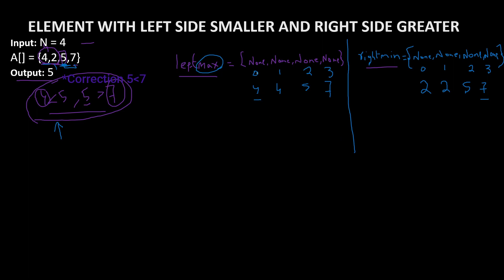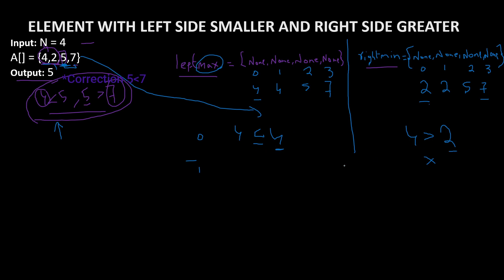After getting the left max and right min values, we compare. At index 0, left_max is 4 and array value is 4, so 4 is less than or equal to 4 - left max condition is satisfied. But for right_min, the value is 2 and array value is 4, and 2 is not greater than or equal to 4. So index 0 is not the answer. For index 1, left_max is 4 but the array value is 2. The condition requires left_max to be smaller or equal, but it is greater, so this doesn't satisfy.